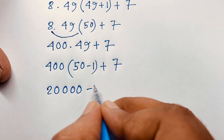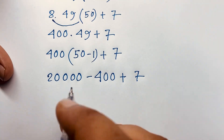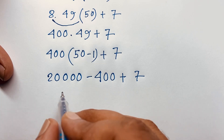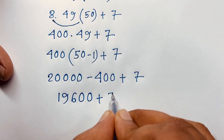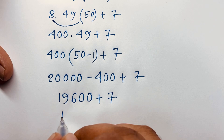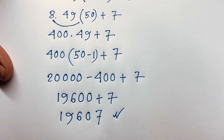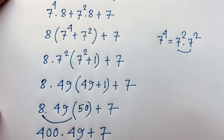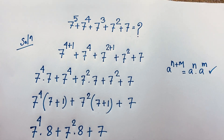Minus 1 times 400 it will be 400, plus 7. So at this moment you can say that it will be 19,600 plus 7, so this plus this it will be 19,607. This is our final answer. We solved this question without a calculator. Thank you all — if you enjoyed this algebra problem please subscribe to my channel for other interesting videos. Goodbye, take care!